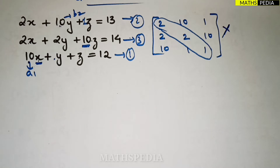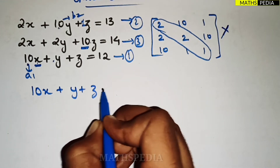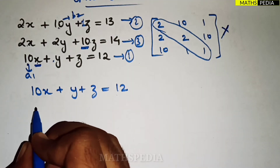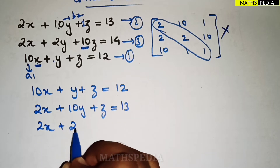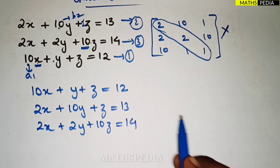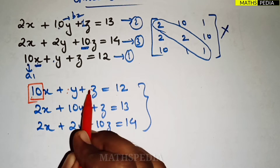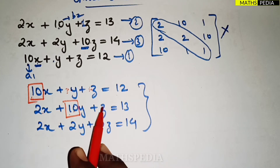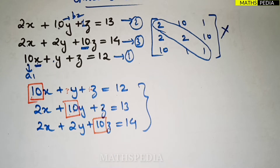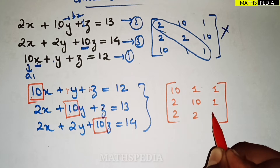Let us now reorder the equations. The first equation is 10x + y + z = 12. The second equation is 2x + 10y + z = 13. The third equation is 2x + 2y + 10z = 40. Observe that in the first equation the coefficient of x (10) is greater than 1 and 1, and in the second equation the coefficient of y is greater than the other two coefficients.